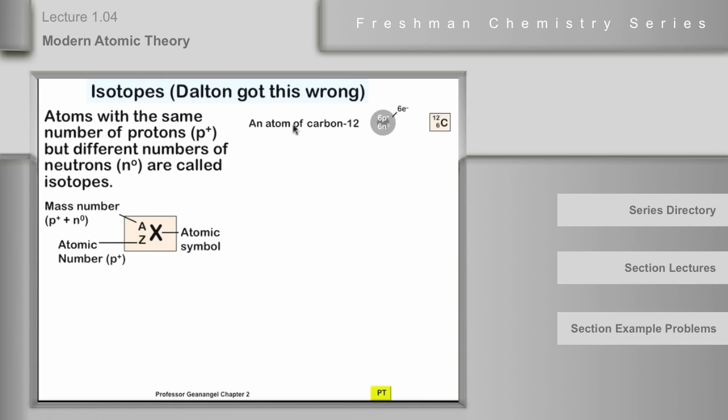So an atom of carbon 12, the 12 here refers to the mass number. An atom of carbon 12 consists of six protons, because it's carbon, six electrons, because there are six protons, and six neutrons, because that's the way it is. So this would be carbon 12, and you see a left superscript 12 and a left subscript of six. Six tells that it's carbon, 12 says that it's the isotope carbon 12 here.